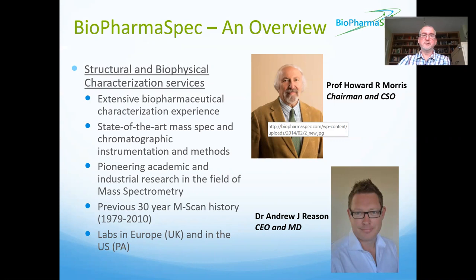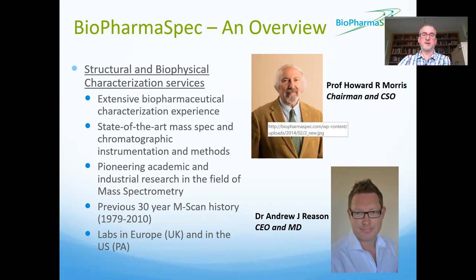BiopharmaSpec is an early stage R&D CRO. We have extensive experience in the structural and biophysical characterization areas. We very heavily use mass spectrometry and chromatographic instrumentation, but we have a full suite of instruments to allow us to fully characterize proteins and glycoproteins at the primary and higher order level. We have labs in the UK and the US.